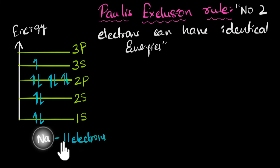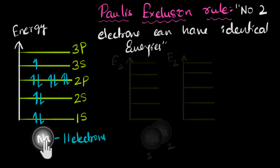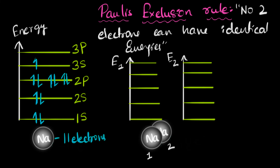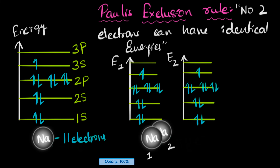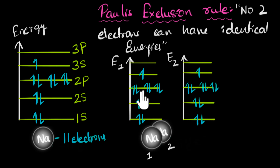What if we have two atoms of sodium very close to each other — what happens then? What if they form some kind of a molecule? How would the electrons of this molecule fill up the energy levels? Can we say that each atom will have its electrons filled up accordingly? Well, that won't work — that can't be possible, because Pauli's rule would be violated.